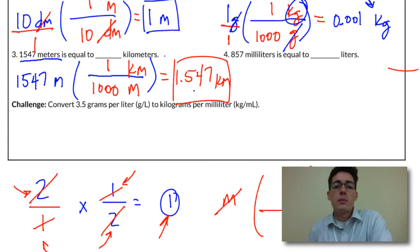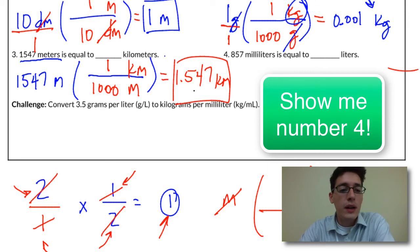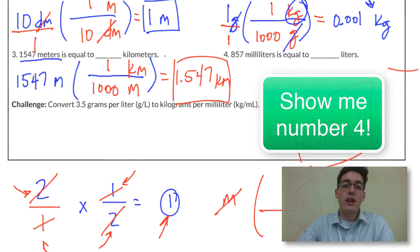So I hope these are making a little bit more sense. If you want to see number four worked out, you can click this button, and it will take you to that. Otherwise, try the challenge problem, and then don't forget your CTQs at the end of the packet. Good job.